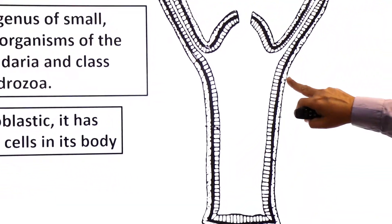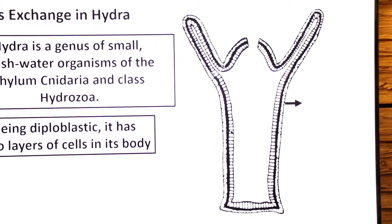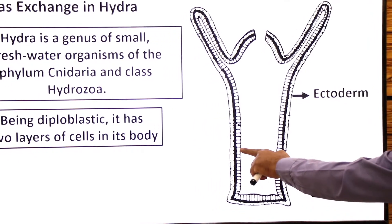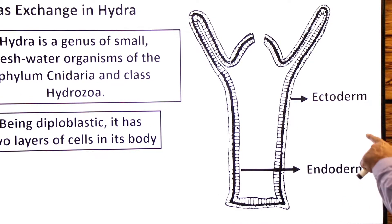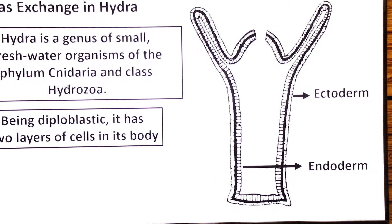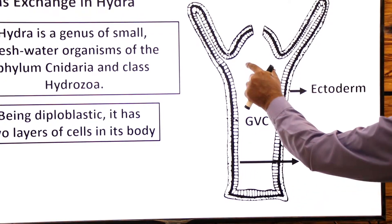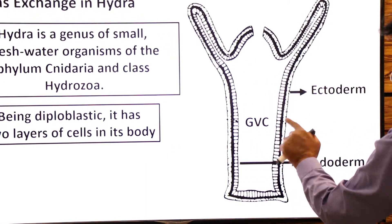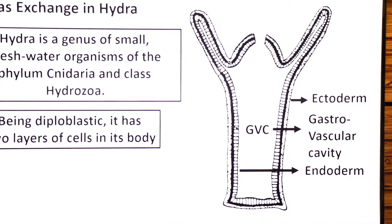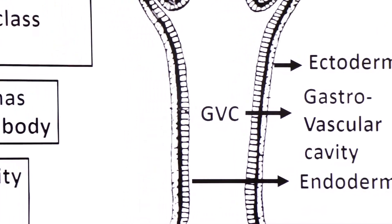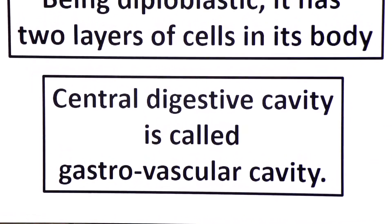The outer layer of Hydra's body is called the ectoderm, and the inner layer is called the endoderm. The central cavity serves as a digestive compartment and is called the gastro-vascular cavity (GVC), which functions in both digestion and circulation of food.